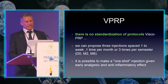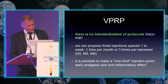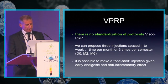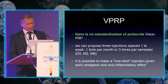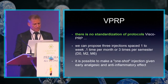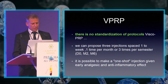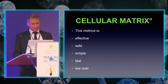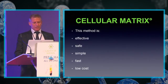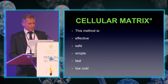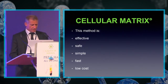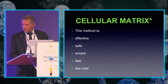For VPRP, there is no standardized protocol yet. We can propose three injections — best spaced two weeks apart, one time per month, or three times per semester. It is also possible to make a one-shot injection, which provides early analgesic and anti-inflammatory effect. Cellular Matrice is an effective, safe, simple, fast, and low-cost method.